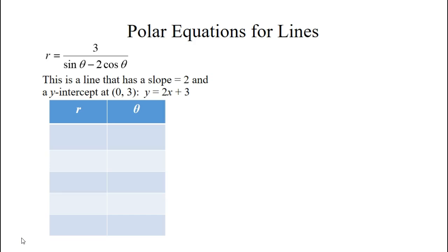We're going to plug in some points to plot this graph. So if we let theta equals 0, we end up with negative 3 over 2 or negative 1.5.